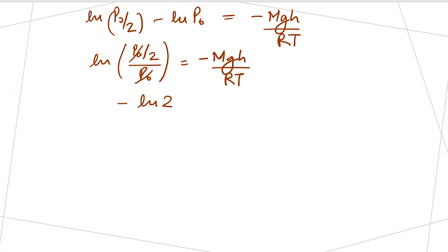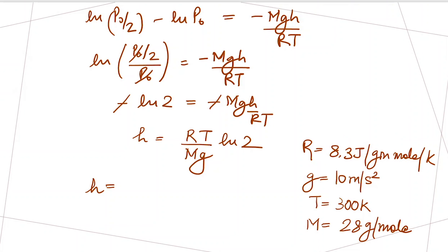This logarithm can be written as P naught over 2 divided by P naught, which is minus mg h over RT. This can be written as minus log 2 equals minus mg h over RT.